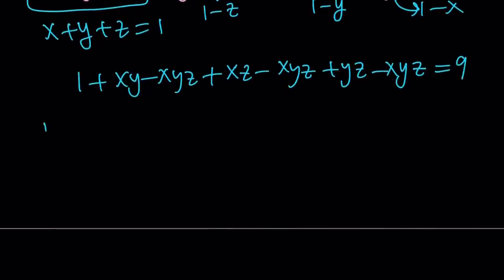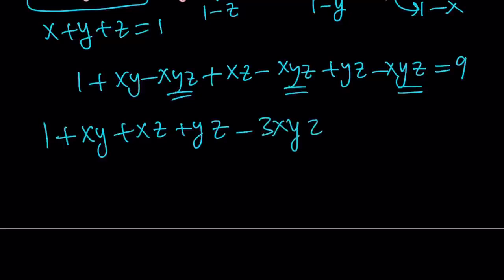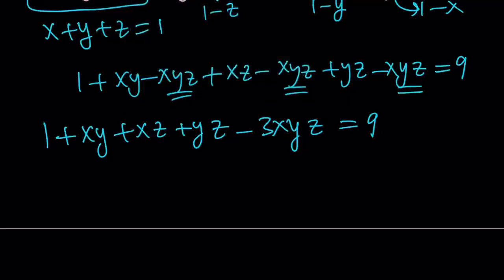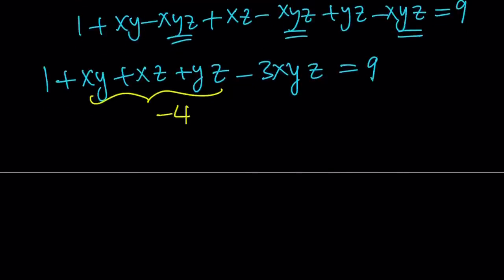Now notice that we can just put xy plus xz plus yz together, and we're going to end up with subtracting 3xyz. Now we have the xy plus xz plus yz. We know that it's equal to negative 4. So from here we get xyz. So 1 minus 4 is negative 3.